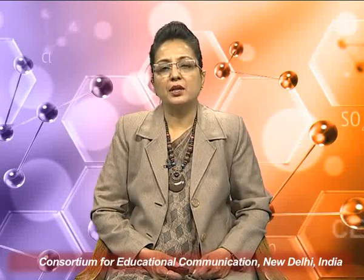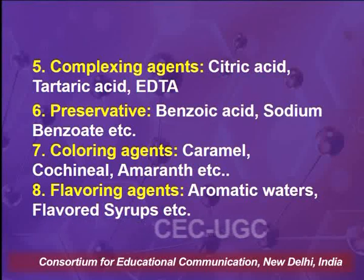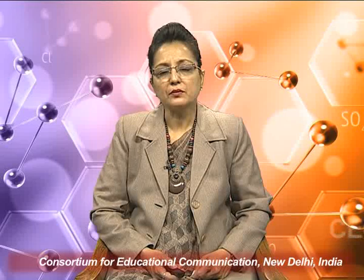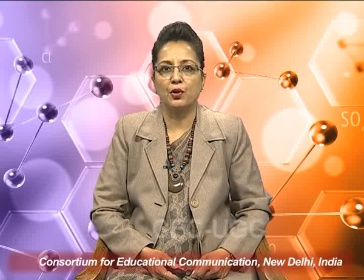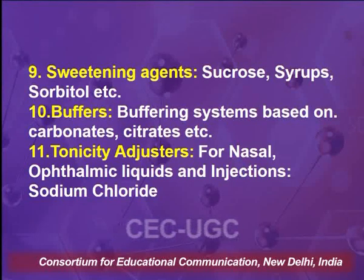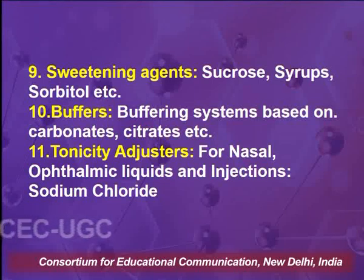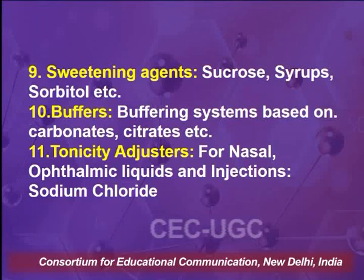The next additive is a flavouring agent. Generally, flavouring agents added are aromatic waters or in general flavoured syrups. Flavour is a very important criterion in the development of a liquid dosage form especially meant for internal use. The next organoleptic additive is a sweetening agent — sweetness is important for improved palatability and better acceptability, especially for liquid dosage forms meant for internal use. Examples include sucrose, syrups or sorbitol.